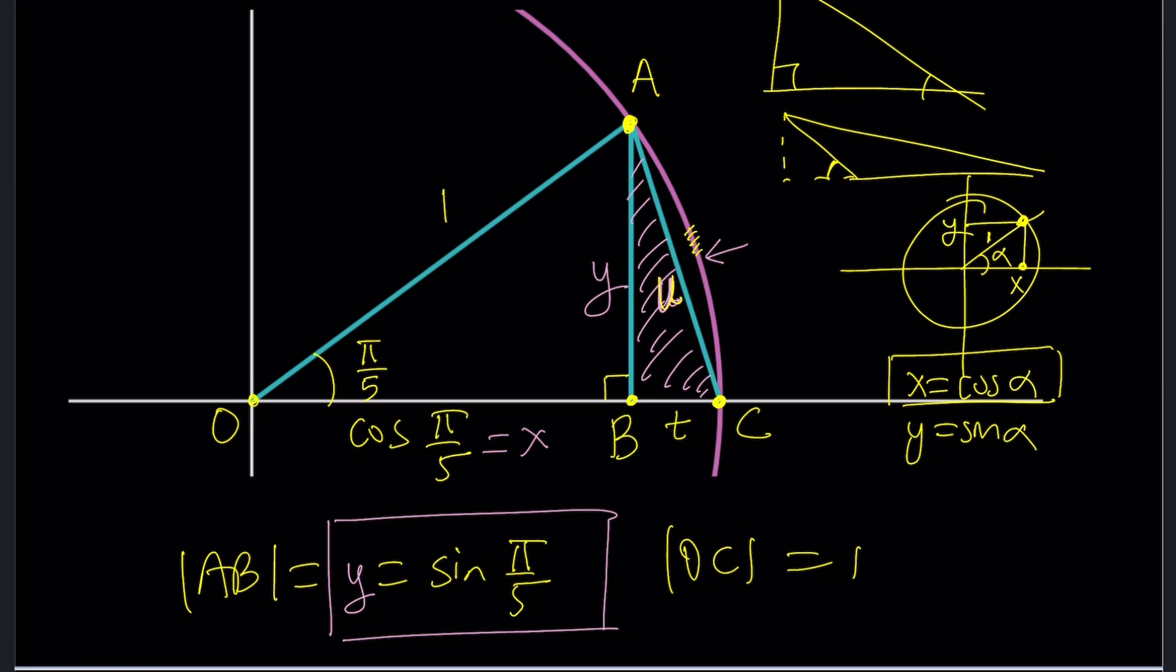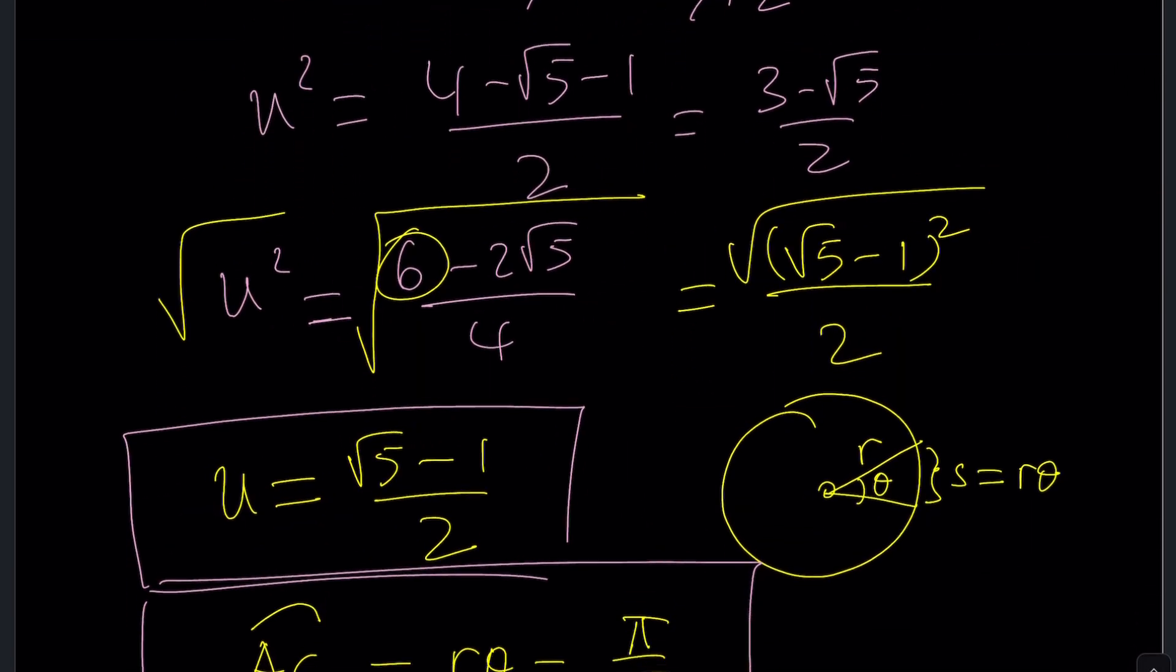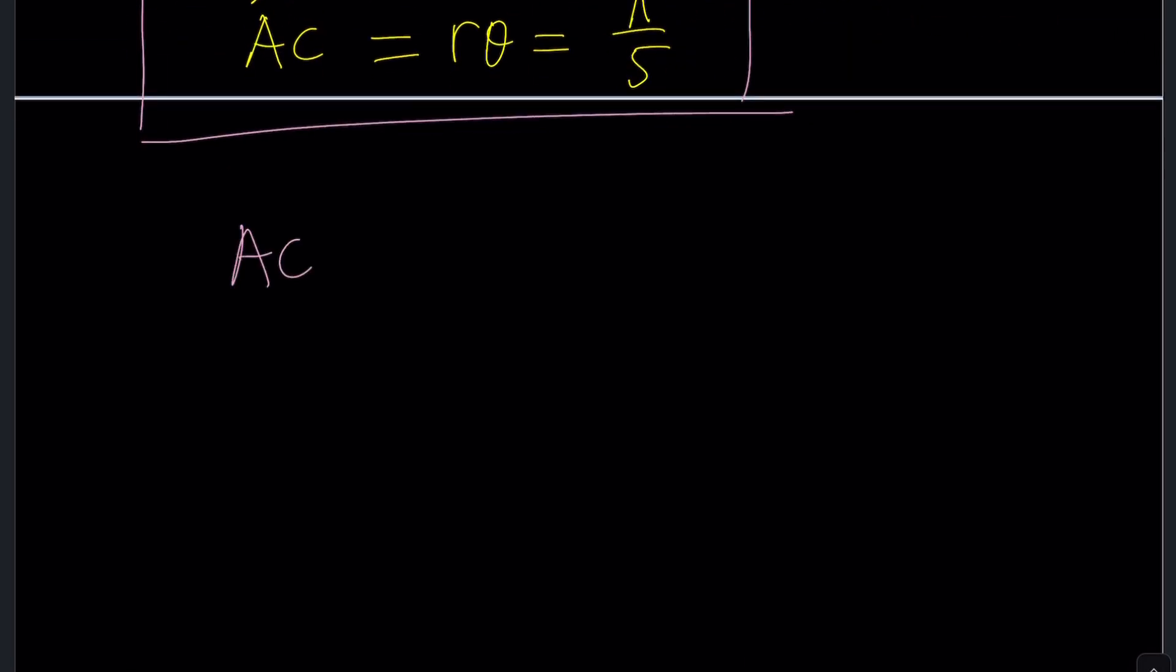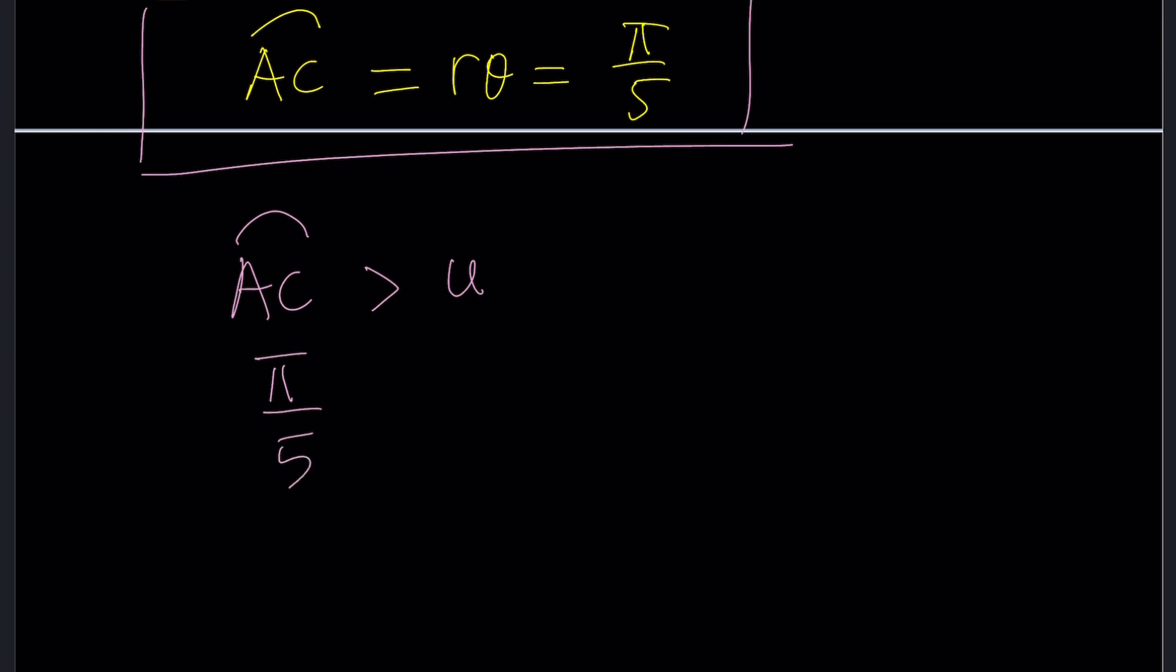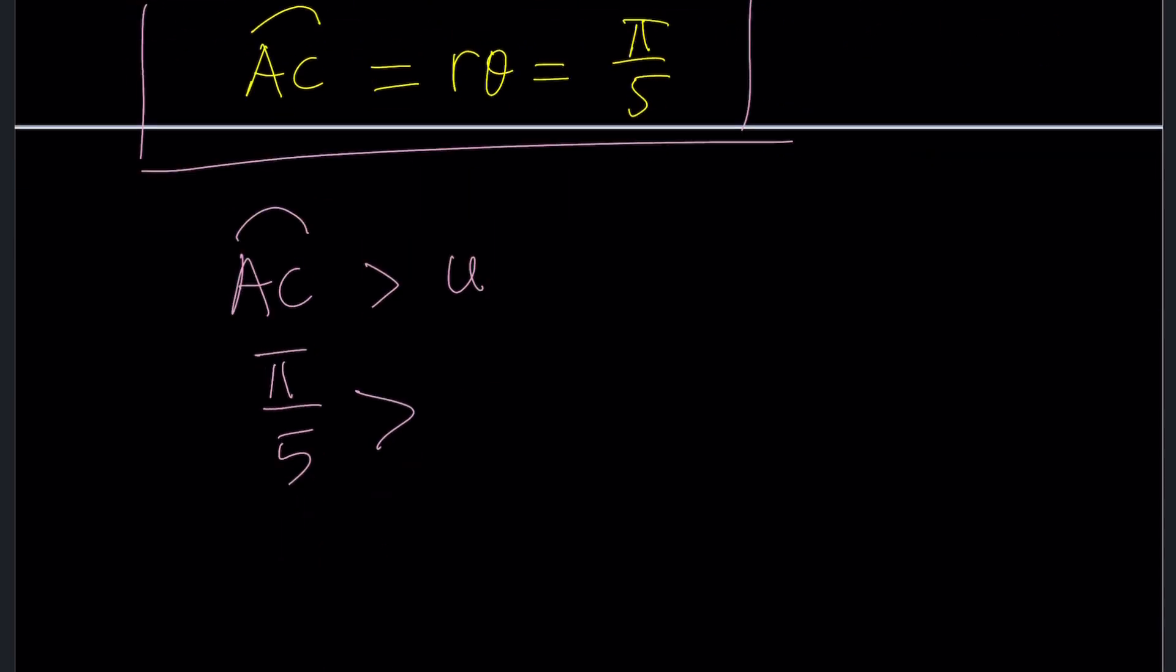Why? Because it's bumpy. Think about it. You have something like this and then you have a bump. Of course this is going to be a little longer. This is the shortest distance between the two points linearly, I mean. Therefore, arc length AC will be greater than U lengthwise. U represents length. So in other words, π/5 is greater than √5 - 1 over 2. And we were trying to find the larger number, right? The winner is π/5. Yay!